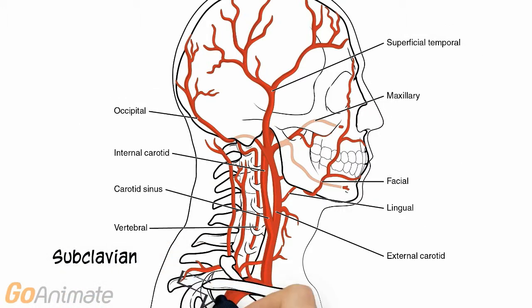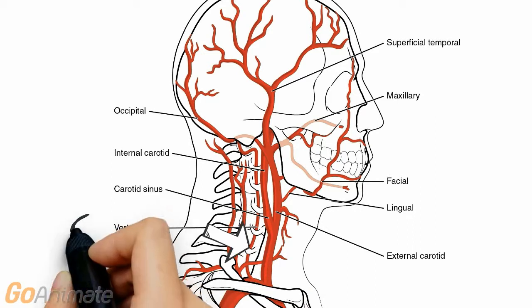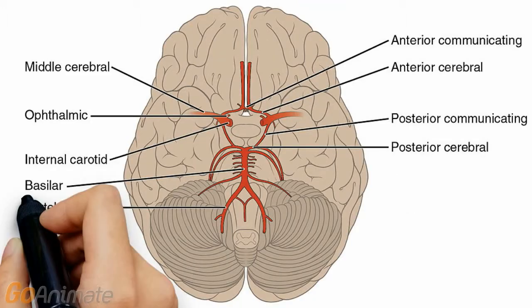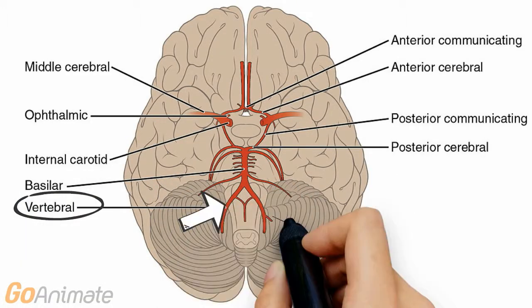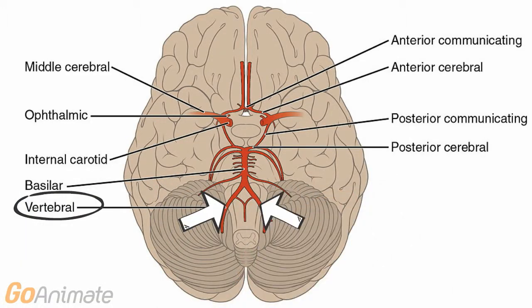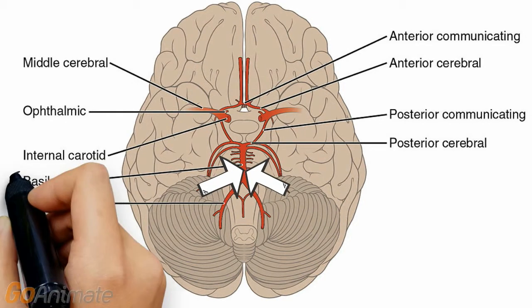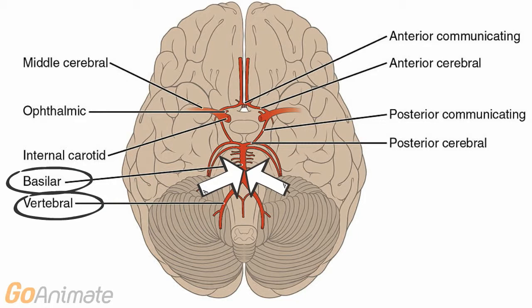The vertebral artery branches off the subclavian and runs through the transverse foramen of the cervical vertebrae. It supplies the cerebral arterial circle, or Circle of Willis. Both vertebral arteries supply the basilar artery, which along with both internal carotid arteries supplies the arterial circle.